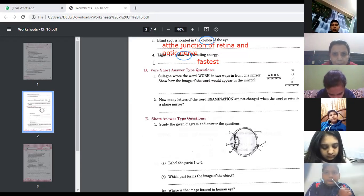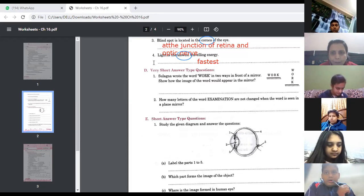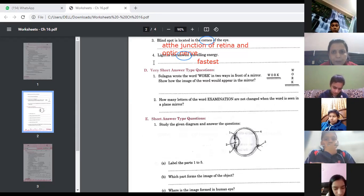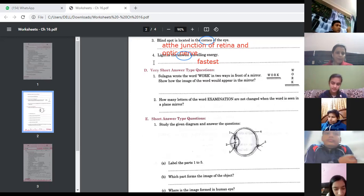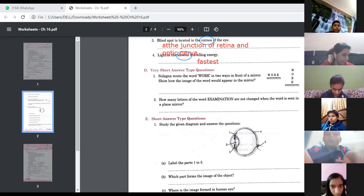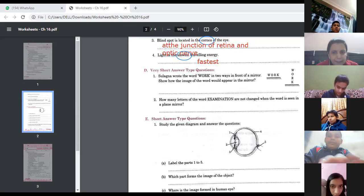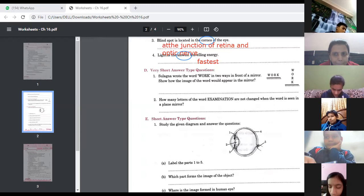Next question D part, very short answer type questions. Slugger wrote the word W-O-R-K in two different ways in front of the mirror. Show how the image of the word would appear in the mirror. Children, this is a mirror image. Kindly write down the words, how she can able to see the words. Write down the words. Now see where the mirror is. Mirror is not on the right side, where is the mirror? Mirror is in the down.